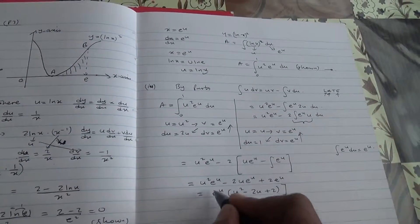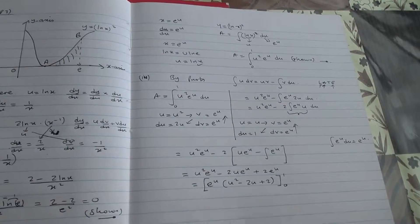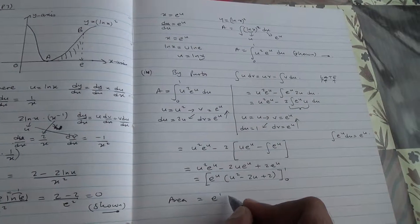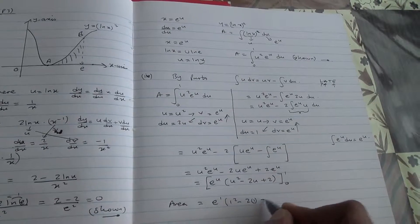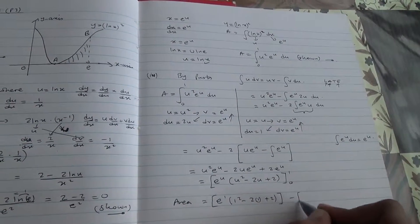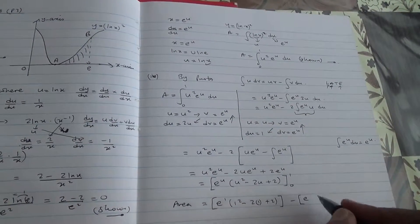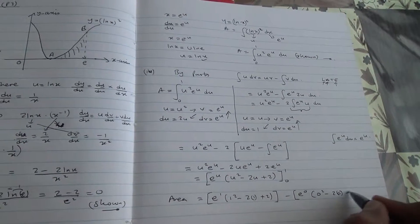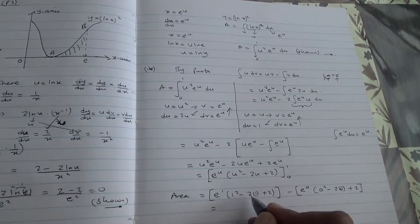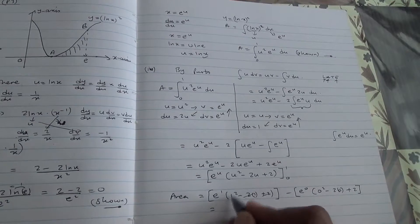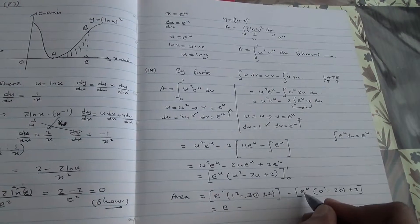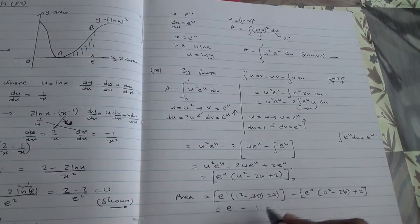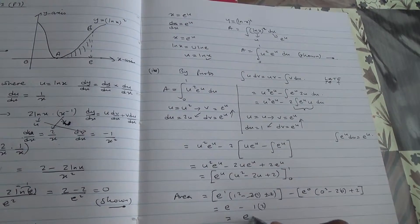Now just to apply the limits, which are 1 and 0 — upper limit minus lower limit. The exact area is e to the power of 1 times 1 squared minus 2 times 1 plus 2, subtract e to the power of 0 times 0 squared minus 2 times 0 plus 2. So 1 minus 2 plus 2 gives 1, times e is e, minus e to the 0 which is 1, times 0 plus 2 which is 2. Therefore the area is e minus 2.